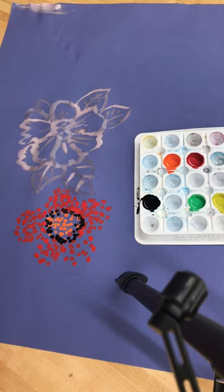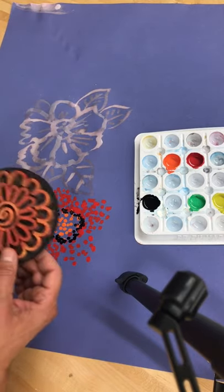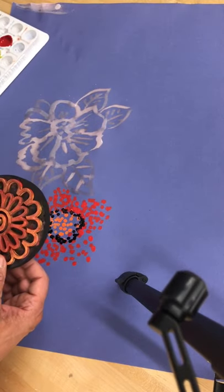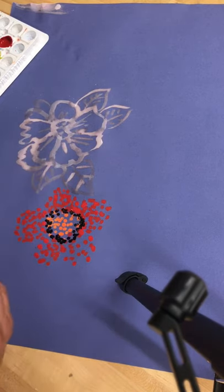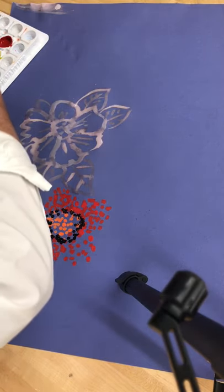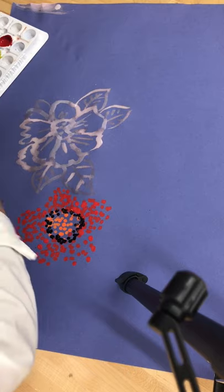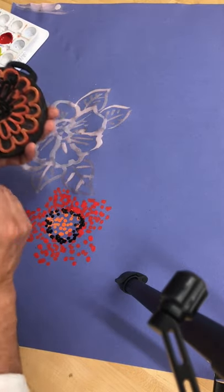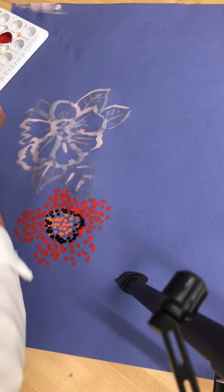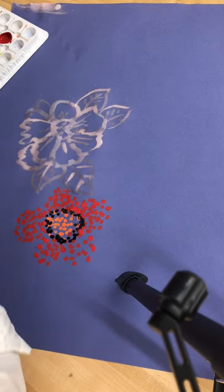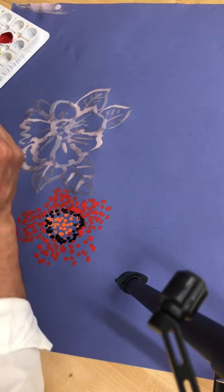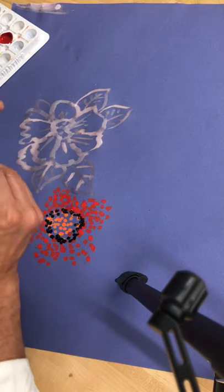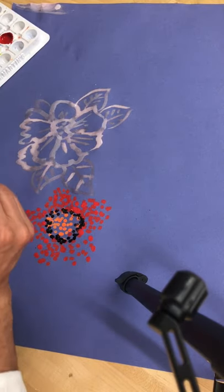Another thing to consider is going to your local craft store and buying a stamp already made. I could use this as a technique for a background. You need to take the paint and put it on your stamp, or you could put some in a plastic or paper plate and then dip the stamp onto the plate.